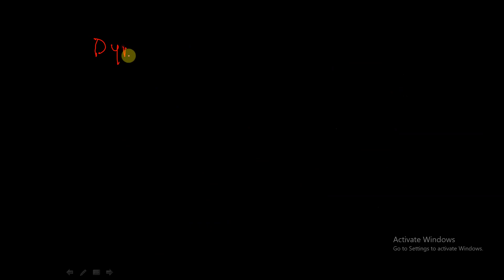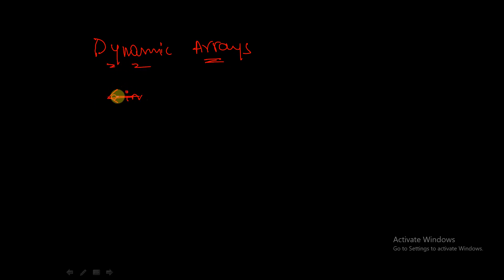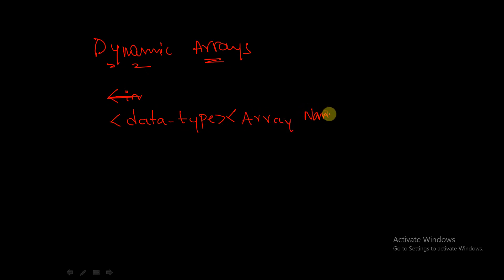Let's see the syntax of dynamic arrays — how to declare them and how to allocate memory. The syntax is: data type, followed by array name, followed by empty braces. So: data type, array name, and empty braces.